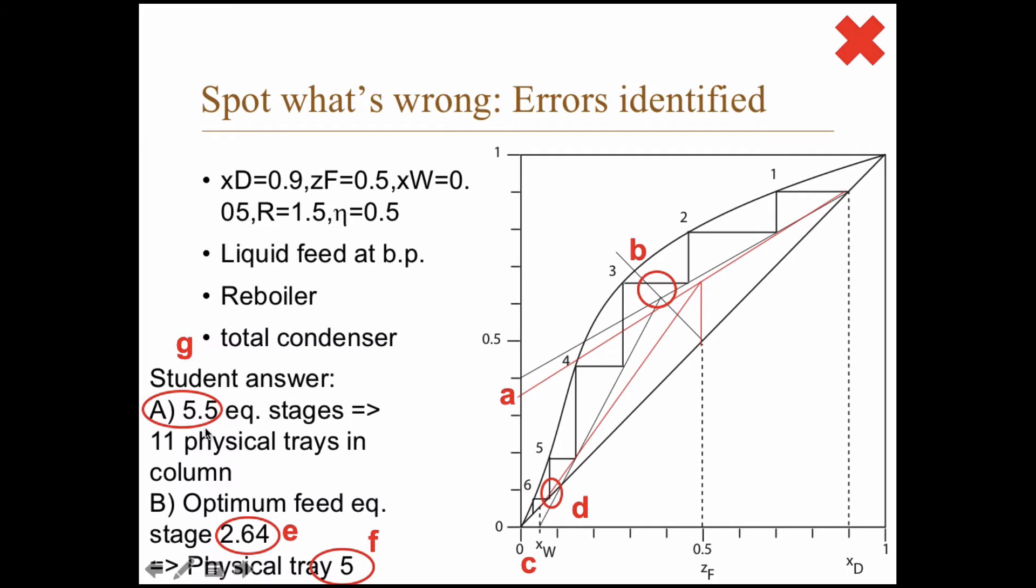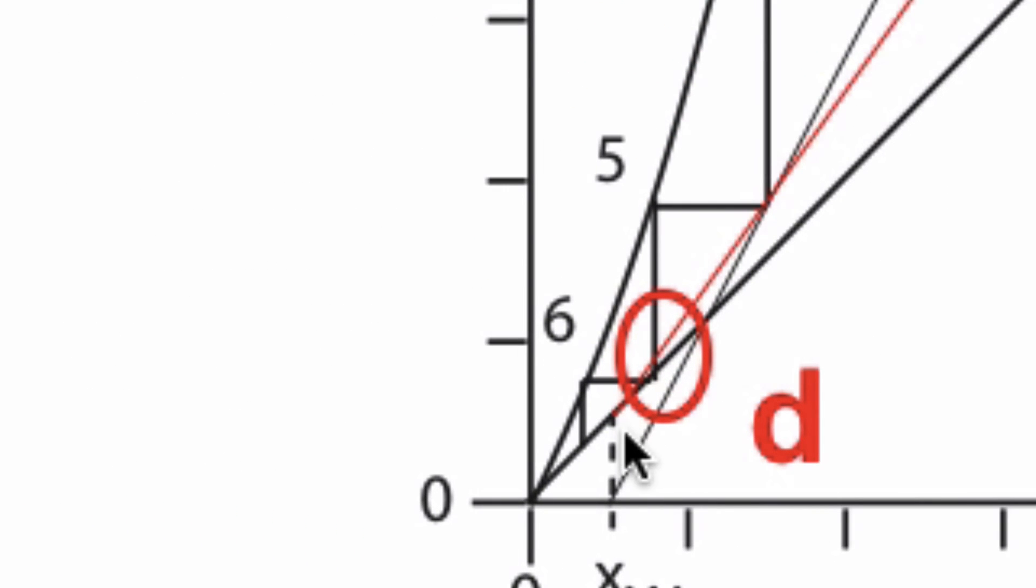g: 5.5, well the first thing is actually you have a reboiler. So 5.5, you need to deduct 1 from there to get 4.5, and then 4.5 divided by 0.5 that's 9, not 11. But yeah, the 0.5 thing is right because that's directly above there.